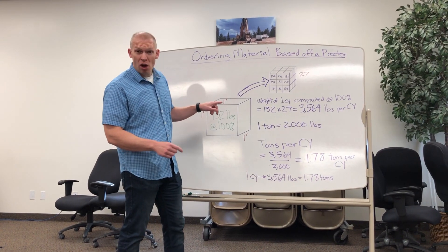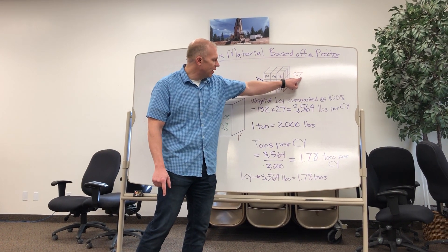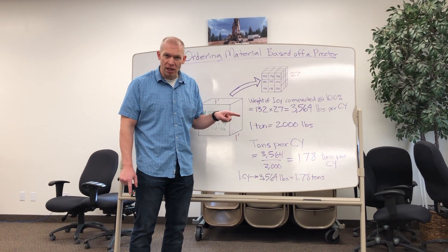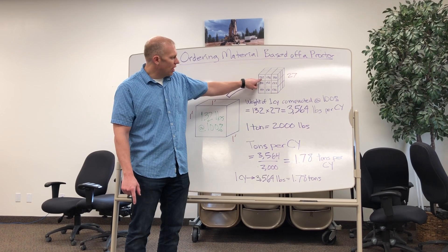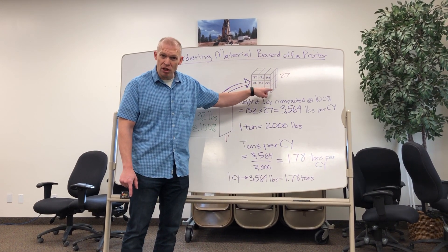We know based off of our other video that there are 27 cubic feet in a cubic yard. And if you look here, I wrote down 132. So each of these cubic feet would weigh 132 pounds.